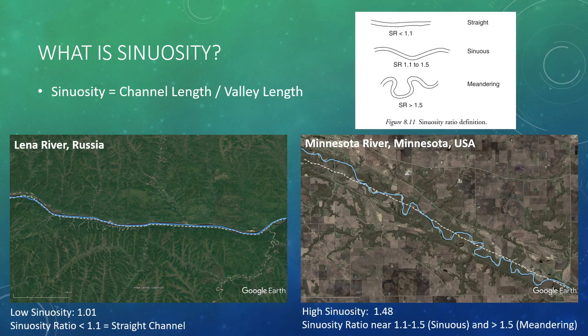Here we see both the center line and the channel line. Did you calculate a sinuosity of about 1.01 for the Lena River? This falls under the straight bin. How about the Minnesota River? Did you calculate about 1.48 for the Minnesota? This falls right at the boundary of the sinuous and meandering bins. And with that, we've calculated sinuosity — it's just a simple ratio calculation.